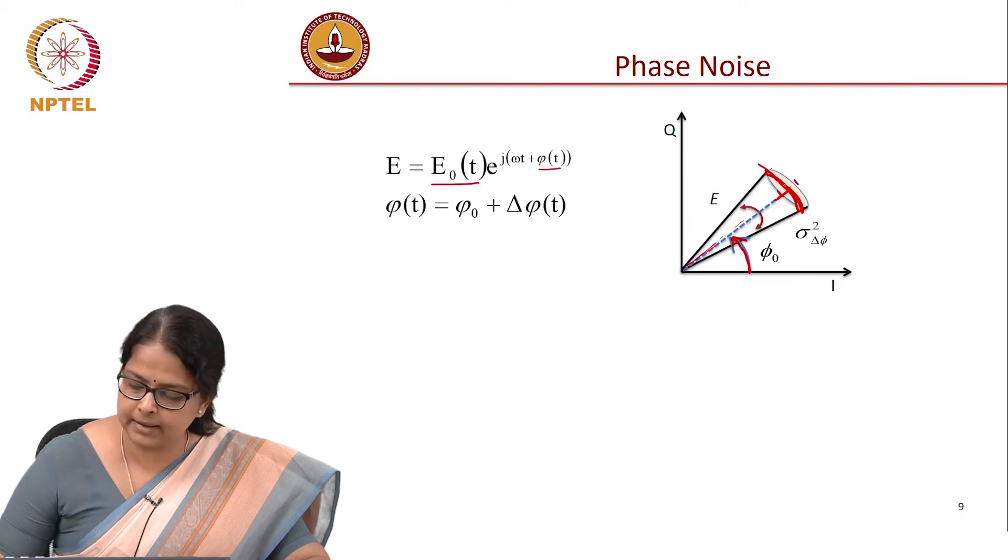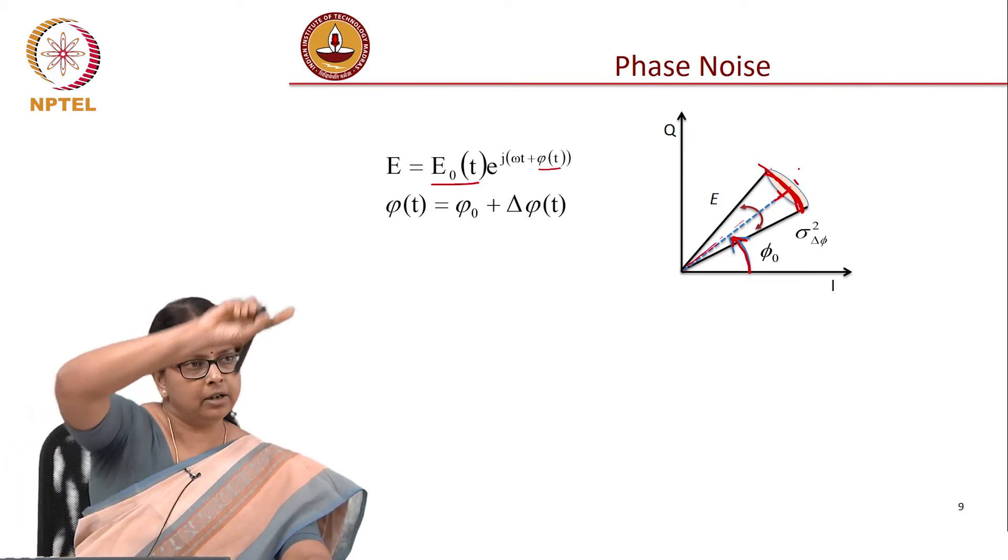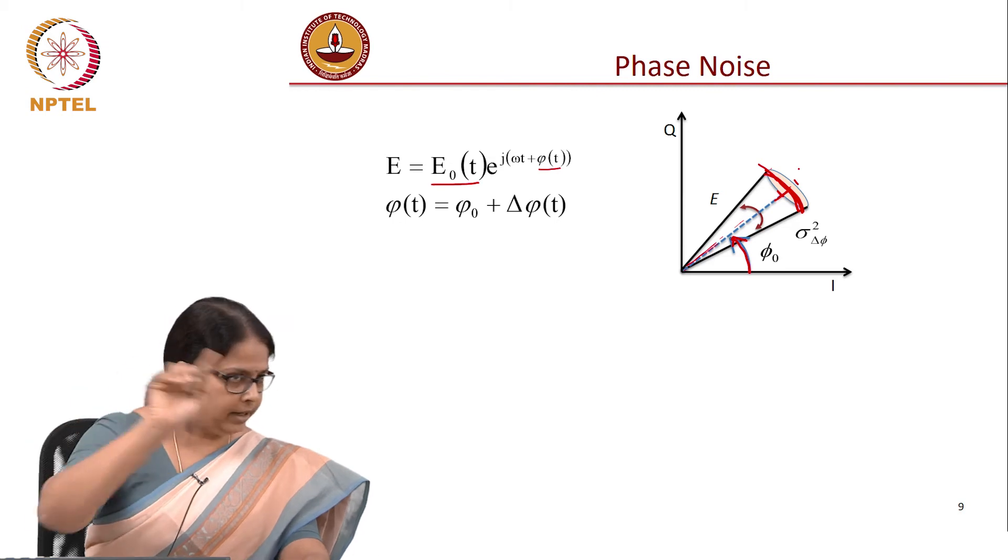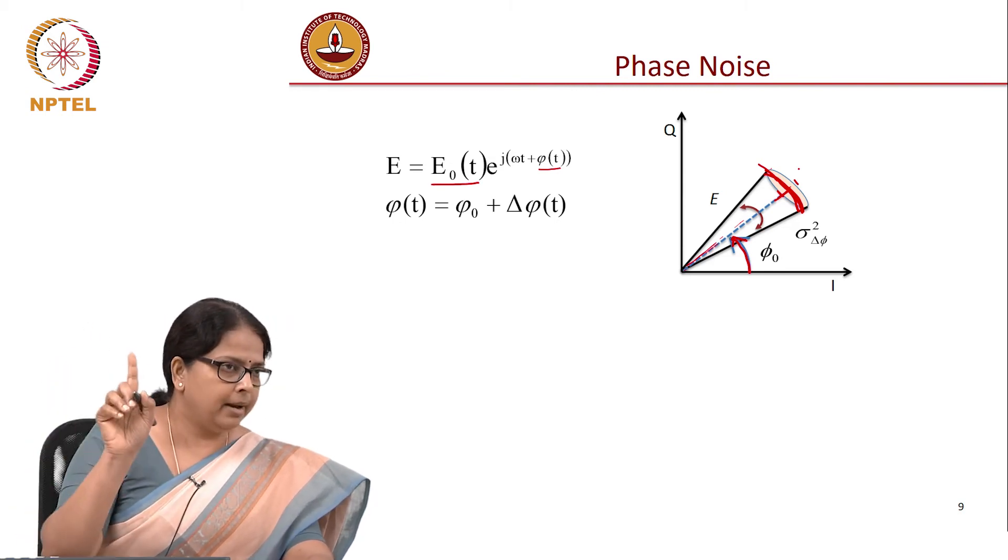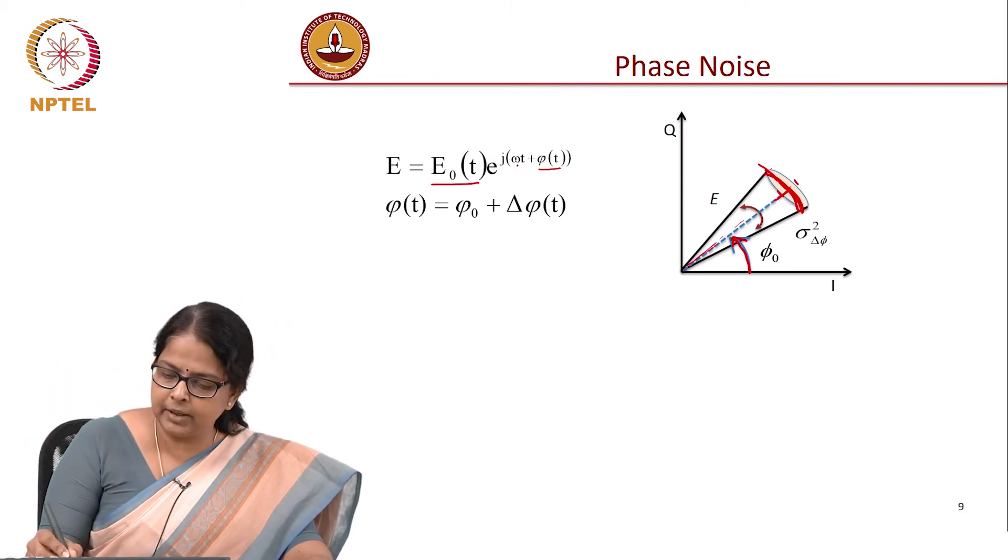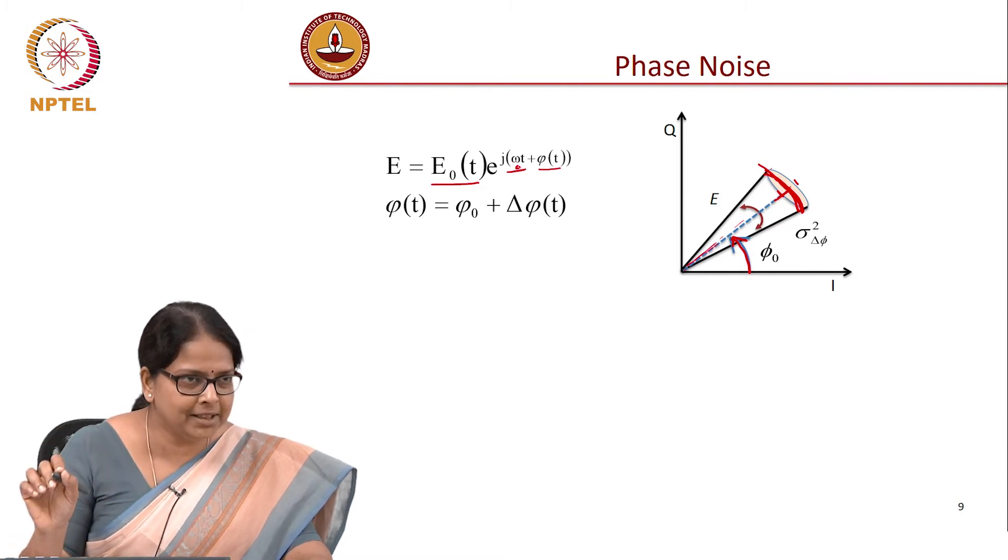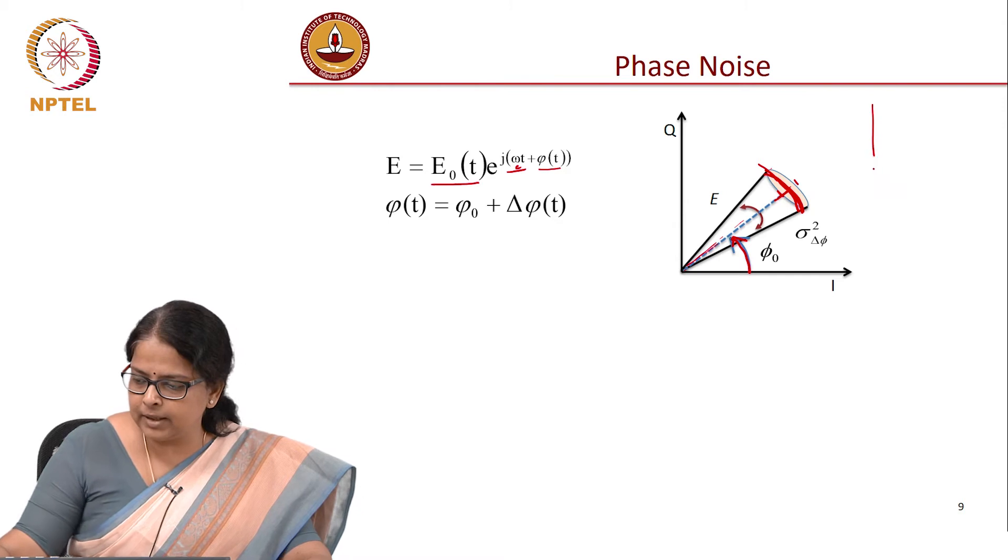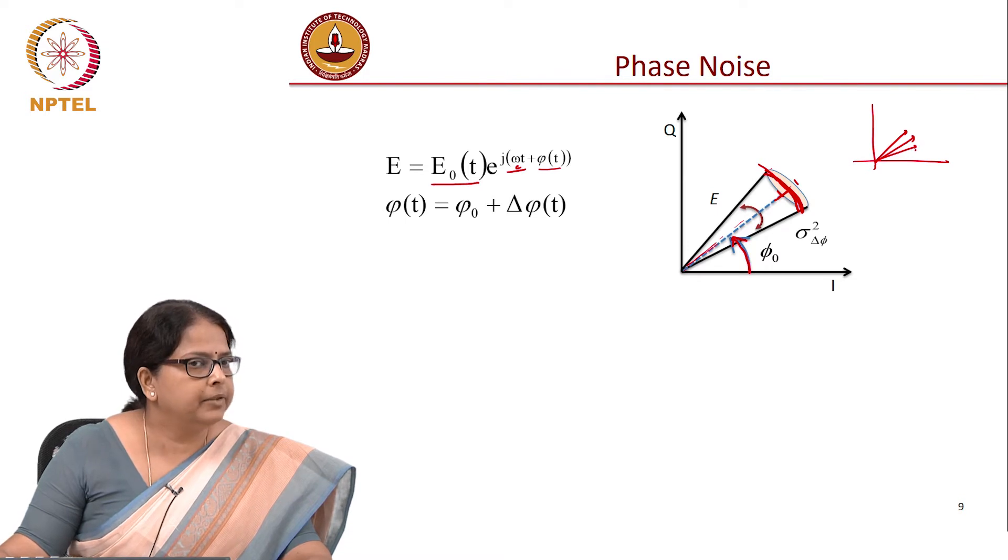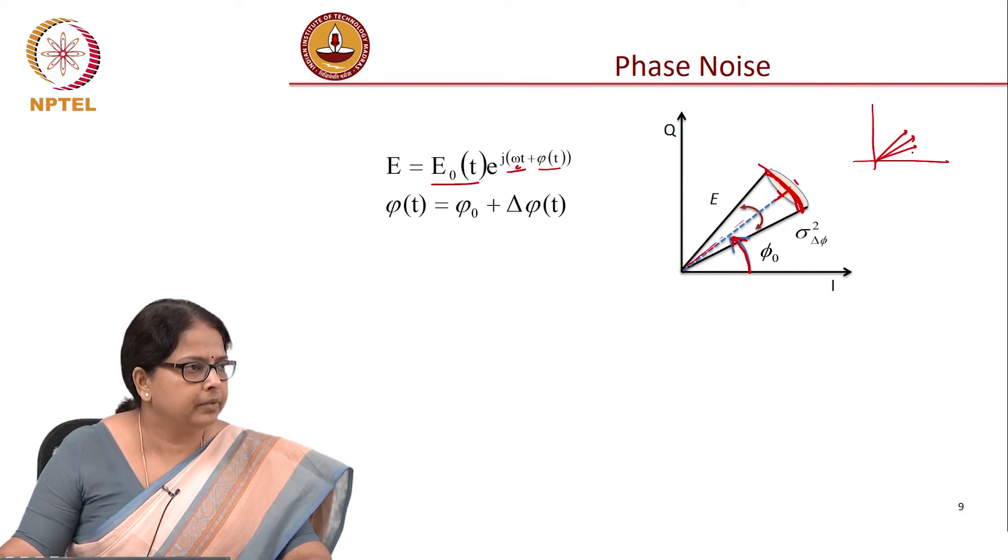So, what really happens is, I have this phasor rotating because of omega, I am not talking about that. I am removing this residue of this omega ct, if I remove that residue, the phasor keeps fluctuating. It could be here, it could be here, it could be here, depending on the phase noise of the system.